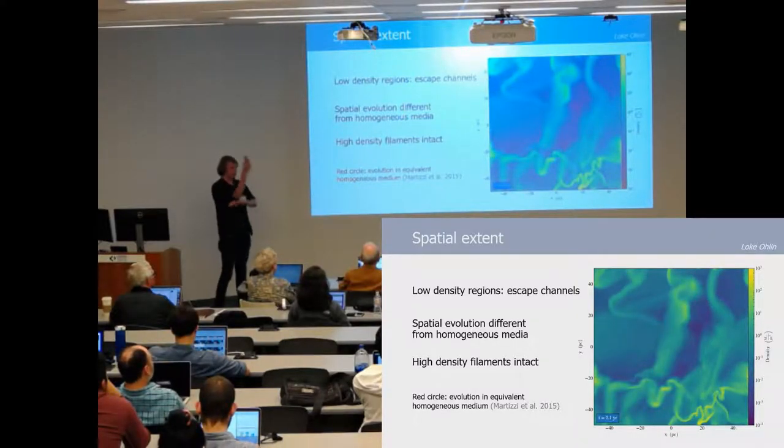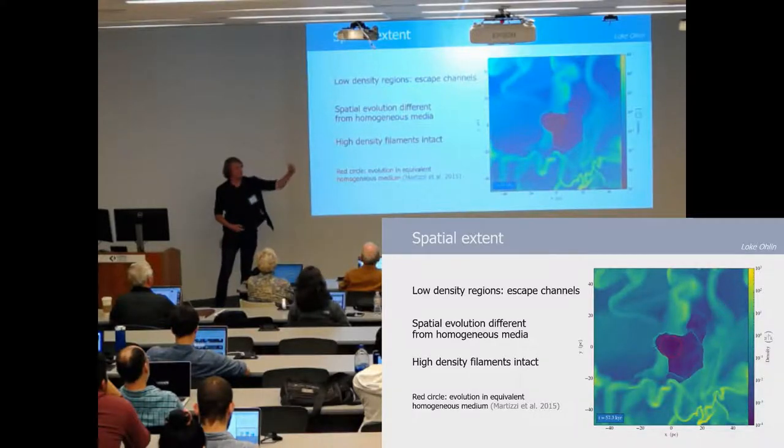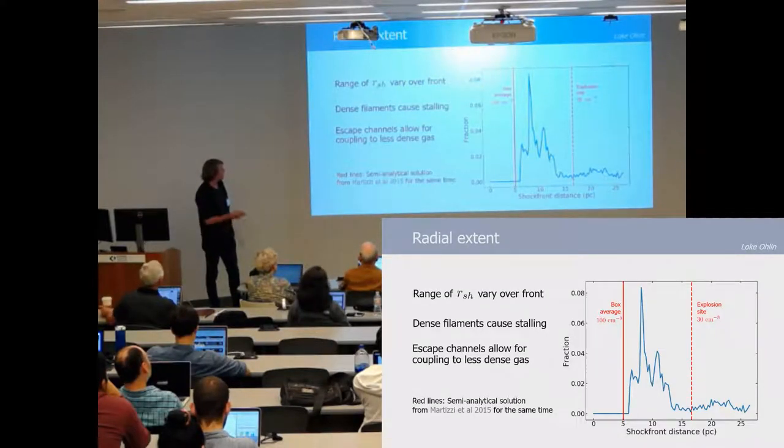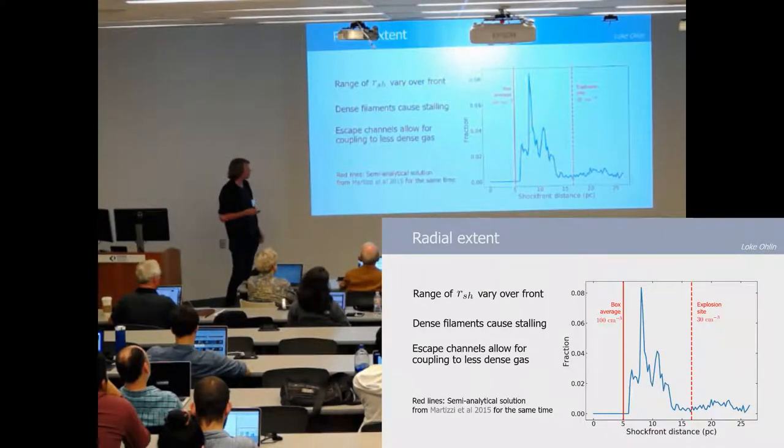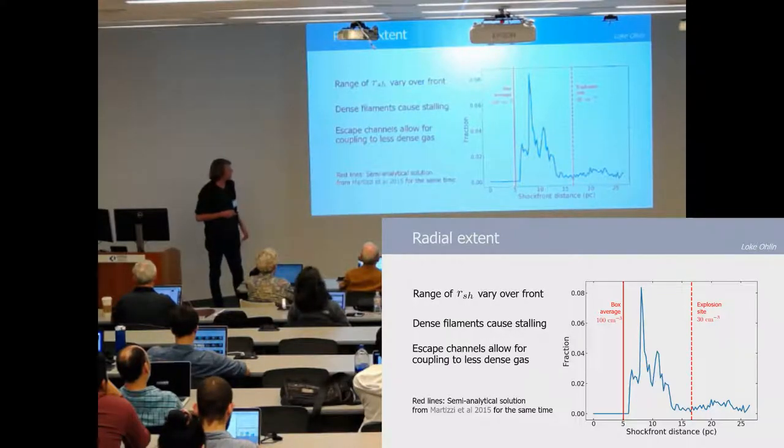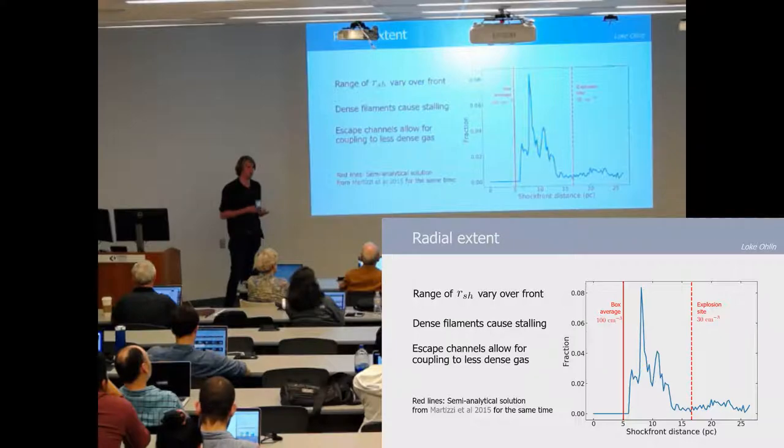By looking at bins and azimuthal angles from the progenitor star we look at the first point at which we find this supernova shock front, and this is the histogram we get from that. As we can see, it varies widely across the shock front. You don't only have the stalling from the high density filament but we also have from the diffuse gas a much wider range in radii.